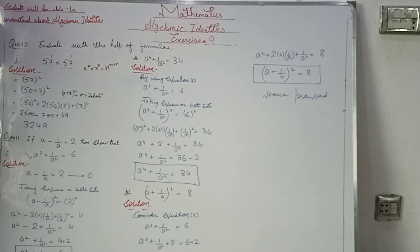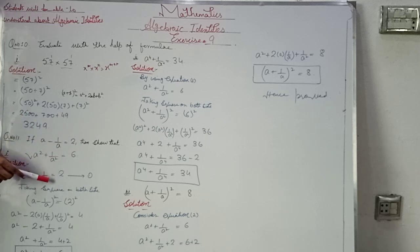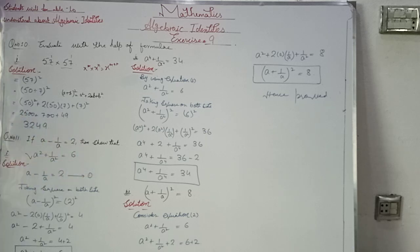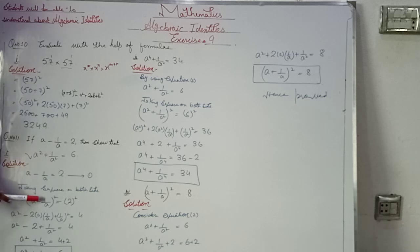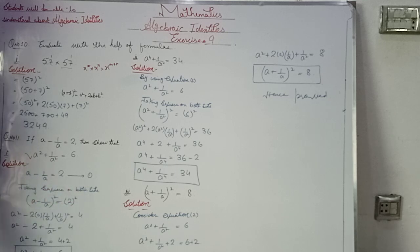This is the first equation: a − 1/a = 2. Taking square on both sides, we get (a − 1/a)² = 2² = 4.